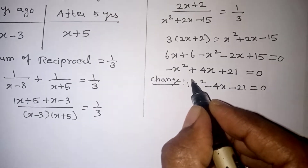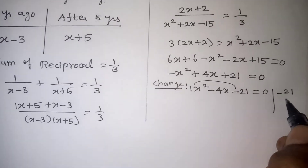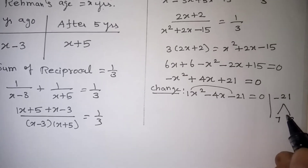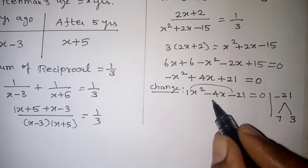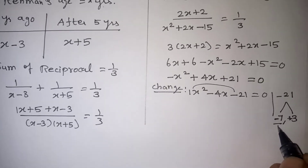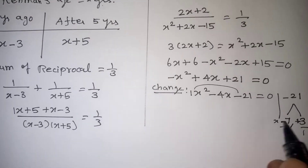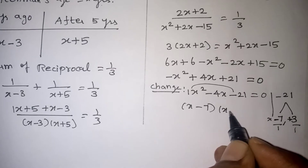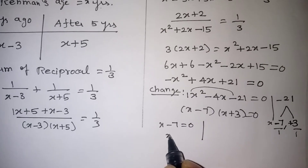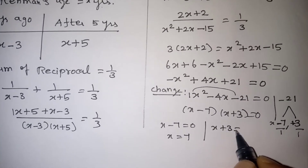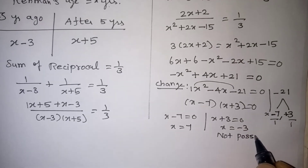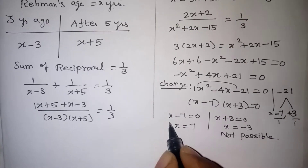Now we factorize X squared minus 4X minus 21. We need two numbers whose multiplication is minus 21 and subtraction is 4. That gives us 7 and 3. So we get (X minus 7)(X plus 3) equals 0. This gives X equals 7 or X equals minus 3. Since age cannot be negative, X equals 7 is correct.